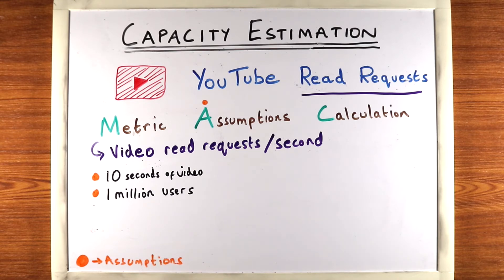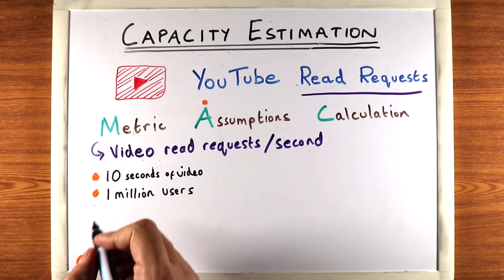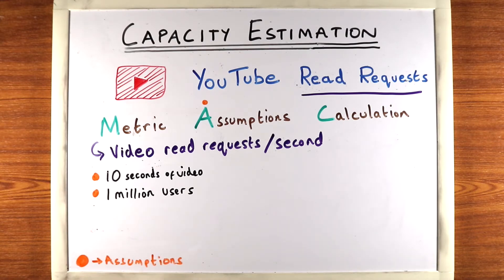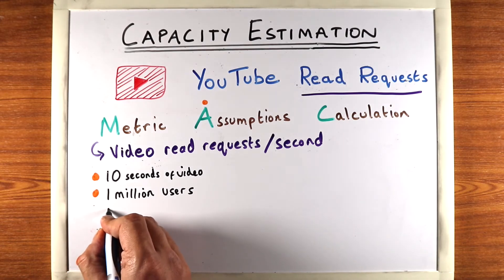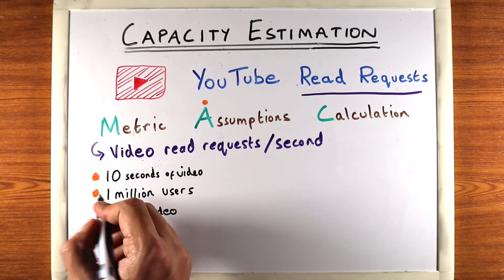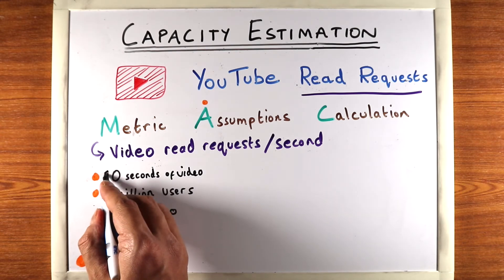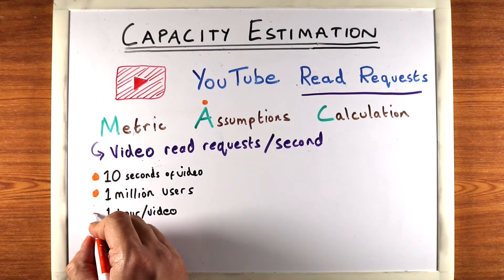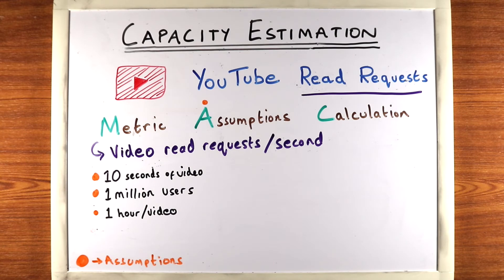With 1 million users, what other data can we use to estimate how many video reads each user will request? One good assumption is how much video an average user watches — let's say one hour of video per day. Notice I'm picking really simple numbers because the goal here is not to test how accurate your estimates are, but whether you can actually calculate something and think reasonably about these systems.